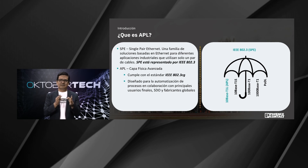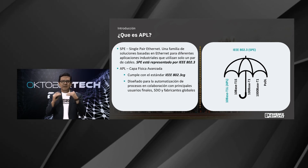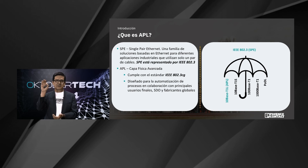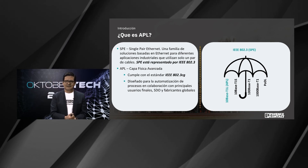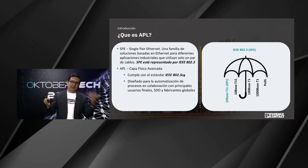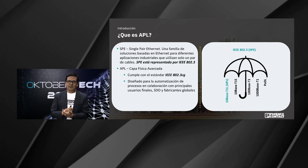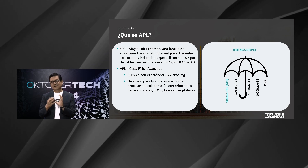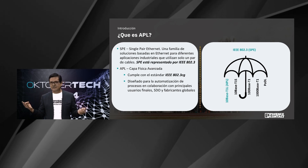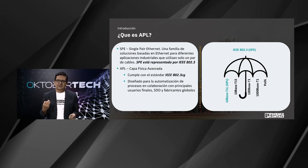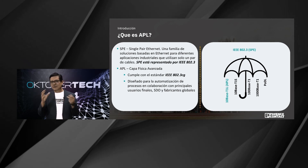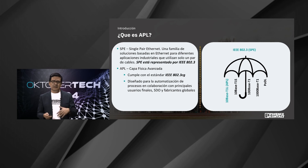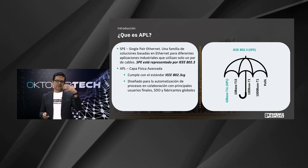¿Qué es APL? APL viene desde un estándar que se llama Single-Pair Ethernet, que es una familia de soluciones basadas en Ethernet que nos permiten desarrollar diferentes aplicaciones industriales bajo el estándar IEEE 802.3. APL, o Advanced Physical Layer, está diseñado para automatización de procesos y se ha desarrollado en colaboración con grandes usuarios finales mundiales, las organizaciones de estandarización internacional y fabricantes globales como nosotros, Endress+Hauser, ABB, Emerson, etc.